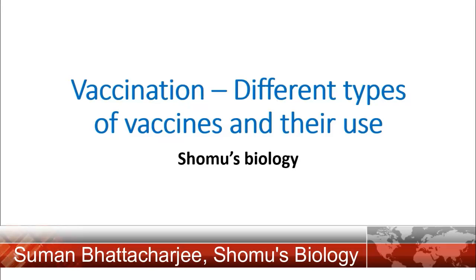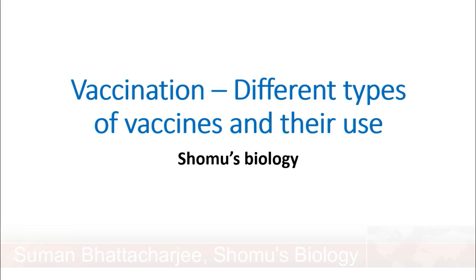Hello friends, welcome back to another video tutorial from Shomu's Biology. In this video lecture we are going to talk about vaccination types — different types of vaccines, their use, their characteristics, and the drawbacks of utilizing different types of vaccines, including live attenuated vaccines, subunit vaccines, and more.